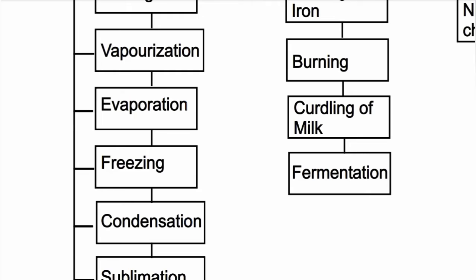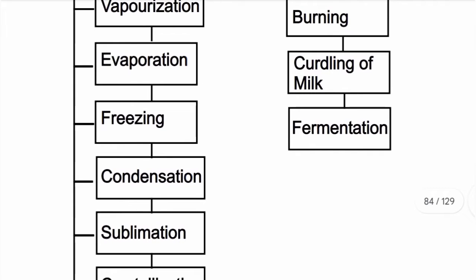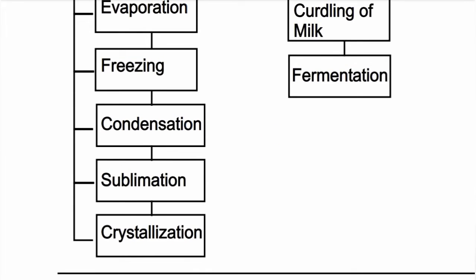Then sublimation. Sublimation is when a solid goes straight to gas — it is directly vaporized. Solid to gas is sublimation. Then crystallization: crystallization is also a method of purification — separation and purification.